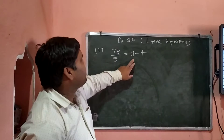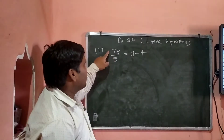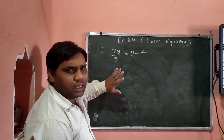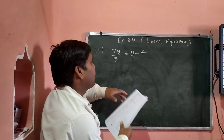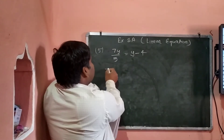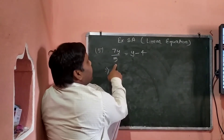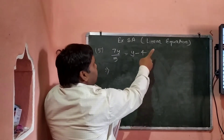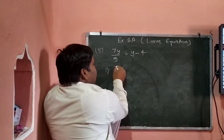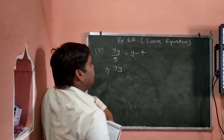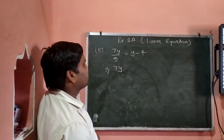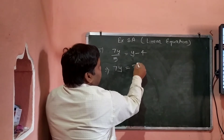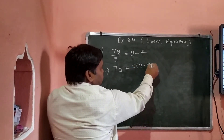हमारा variable एक यहाँ पे है और एक यहाँ है, तो variable को एक तरफ करना है। यह जो 5 denominator में है, अगर यह उस तरफ जाएगा तो multiply हो जाएगा — means 7y equal to, यह 5 तीनों से multiply होगा।